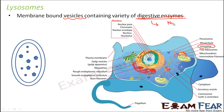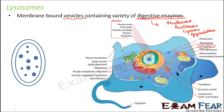These enzymes could be nucleases, which digest nucleic acids like RNA or DNA. It could be proteases, which digest proteins. It could be lipases, which digest lipids. It could be glycosidases, which digest polysaccharides — the complex sugars, polysaccharides or disaccharides. These kinds of enzymes are contained inside the lysosome.